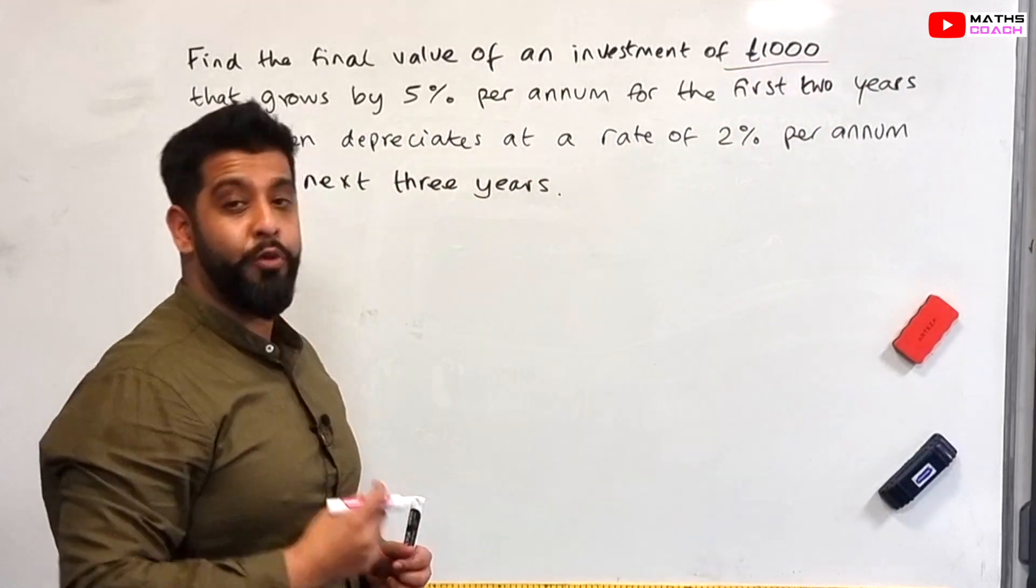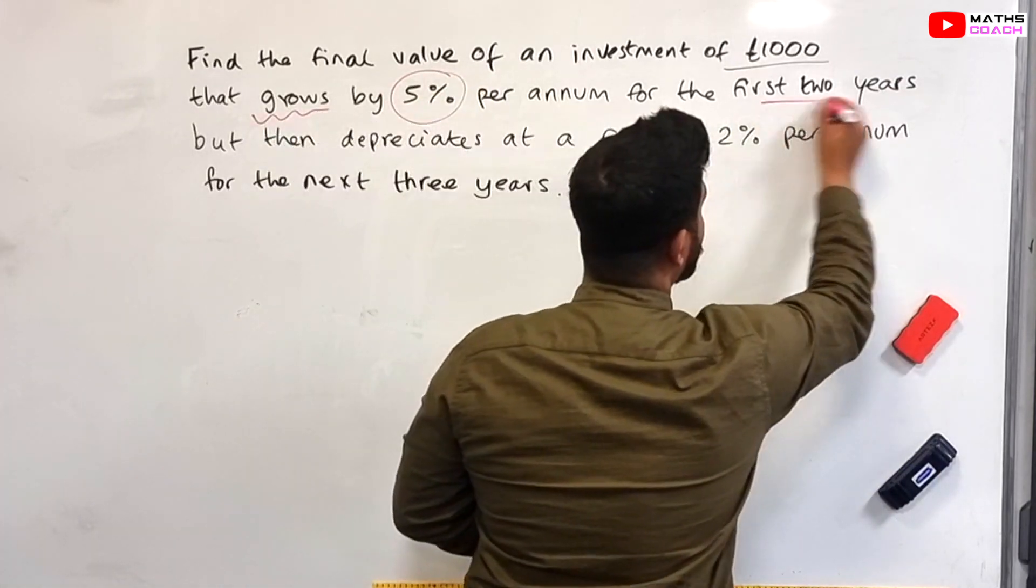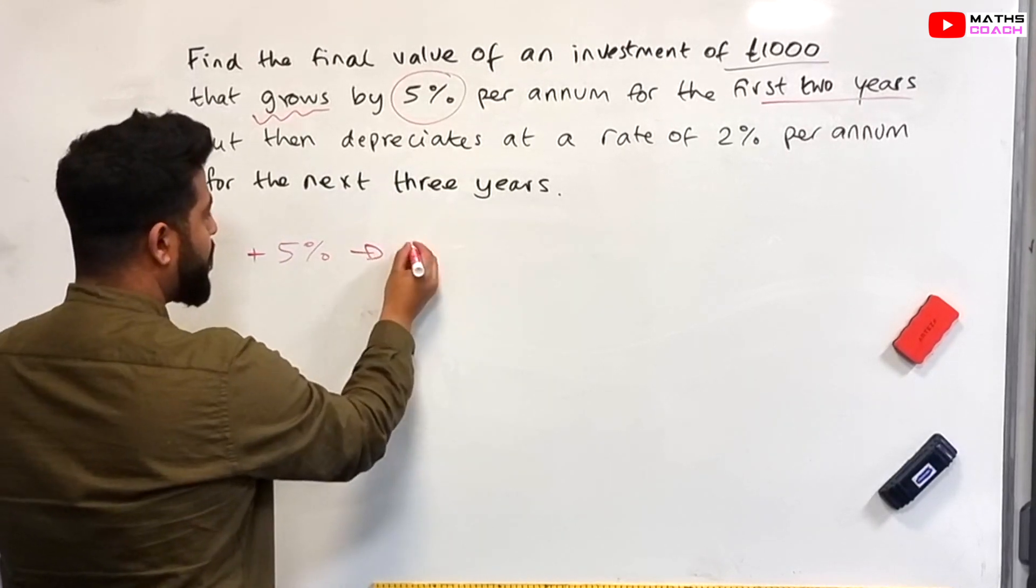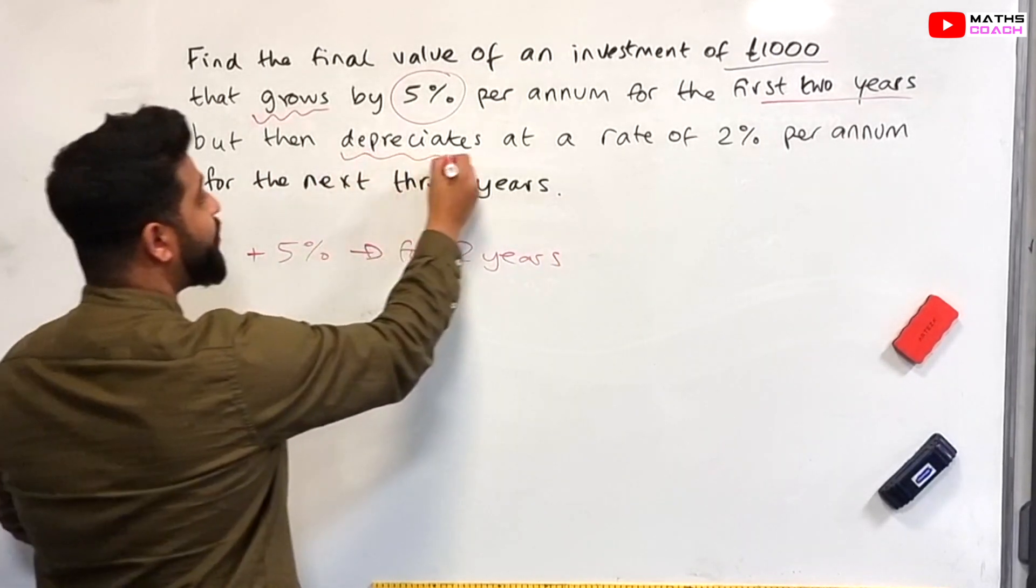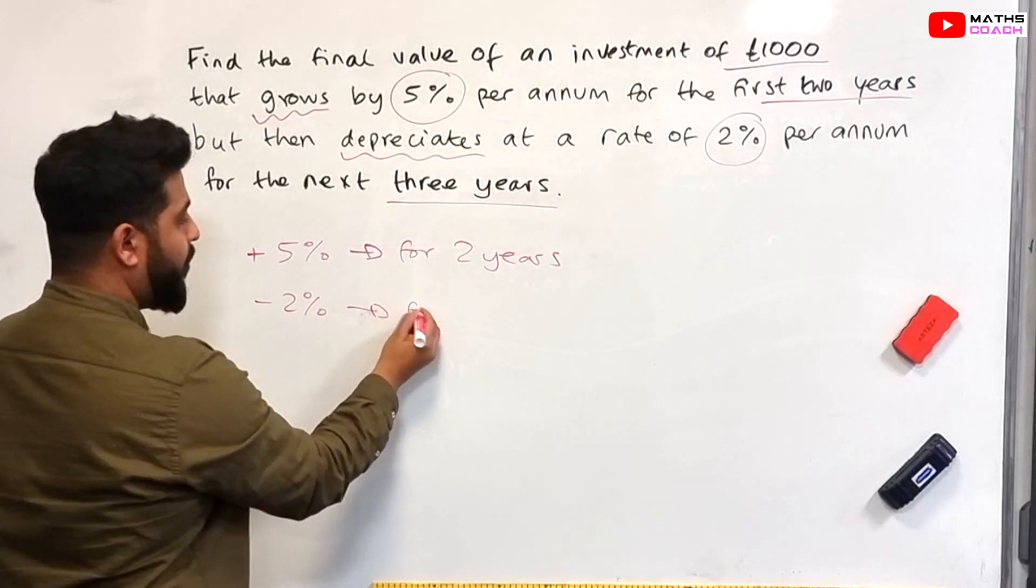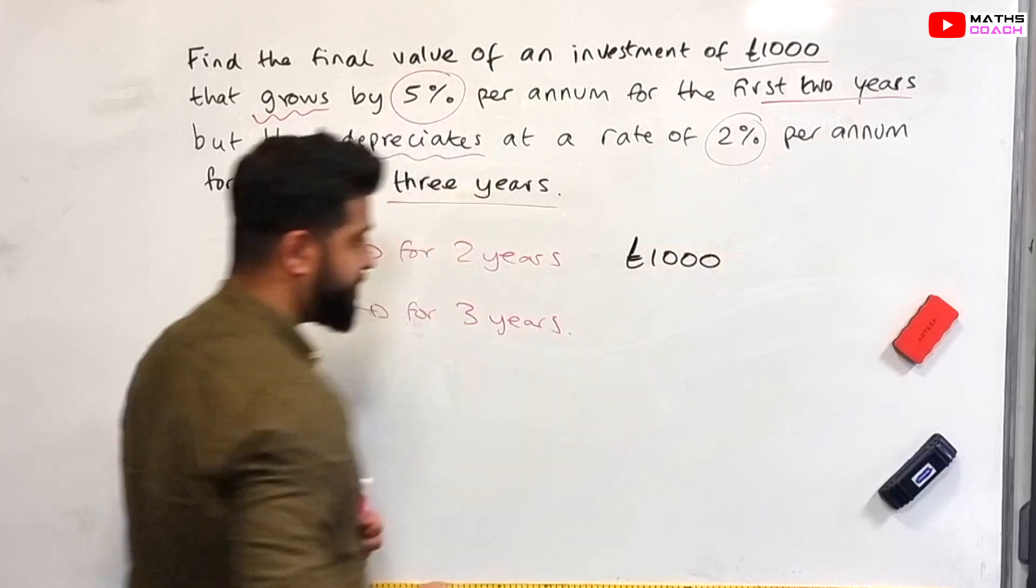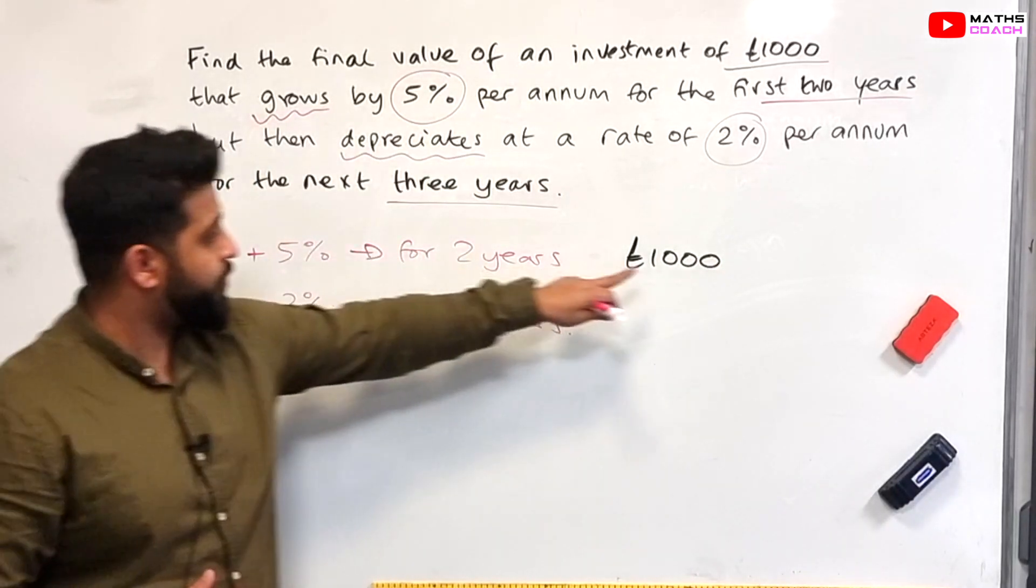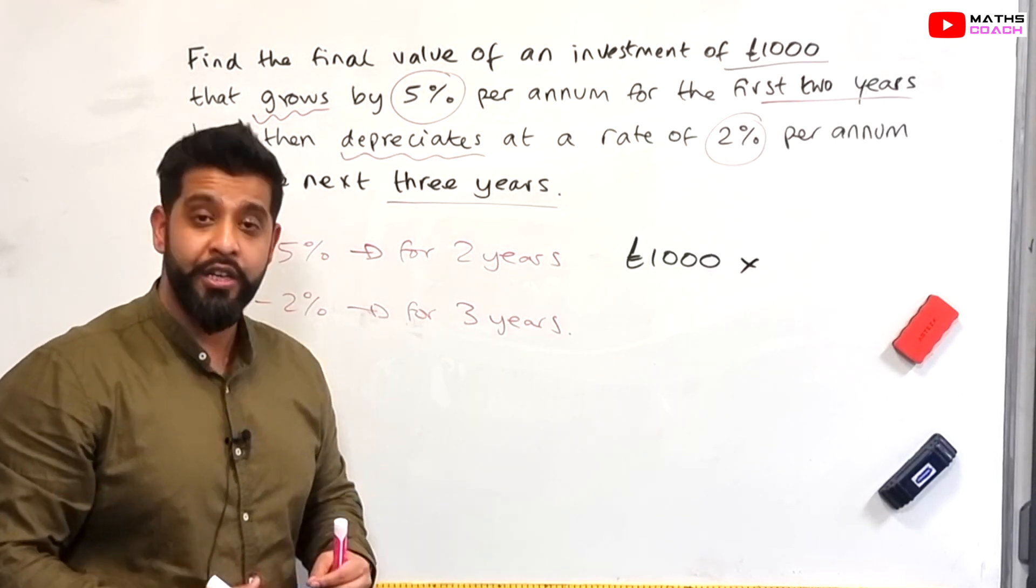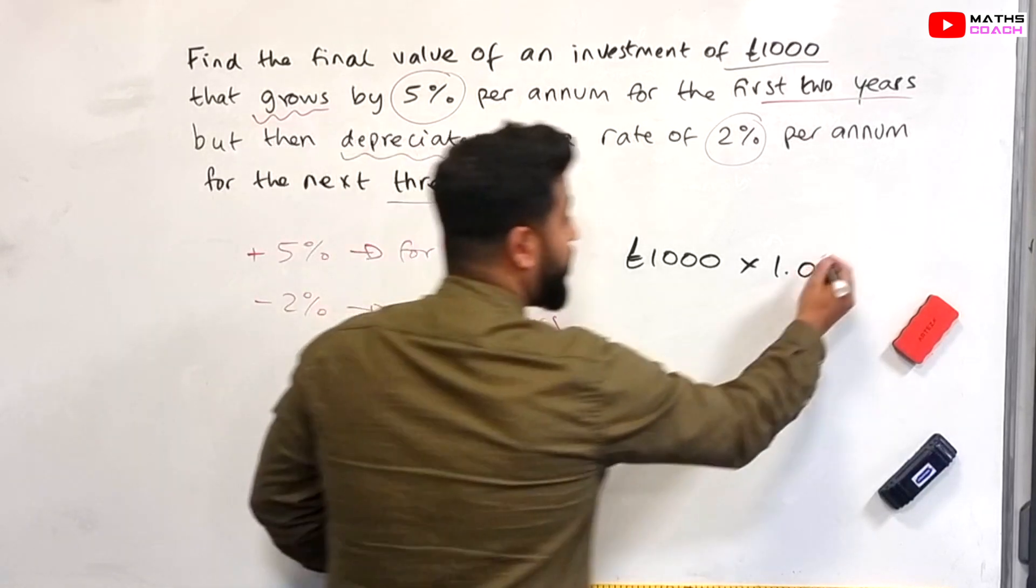Now I am going to underline the key parts of this question. So this is £1,000, our principal amount, our original amount, and we are told that it grows. Grows means to increase, increases by 5% per annum for the first two years. So let's write this down: 5% increase, plus 5% for two years. And then what happens, it depreciates at a rate of 2% per annum for the next three years. So it depreciates by 2% per annum for the next three years. Let's calculate this. So 5% for the first two years, the multiplier is going to be 100 plus the 5% which is 105 and then we divide it by 100. So we get 1.05. So the multiplier is going to be 1.05 and the power is going to be to the power of two years.